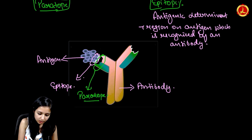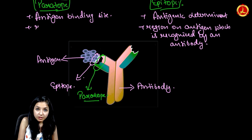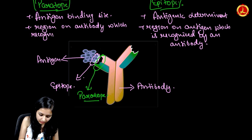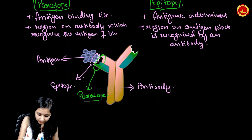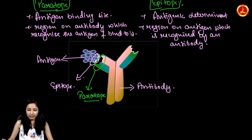And what is paratope? The paratope is also known as the antigen binding site. It is a region on the antibody that recognizes the antigen and binds to it. So the paratope is an antigen binding site — the region on the antibody which recognizes the antigen and binds to it.